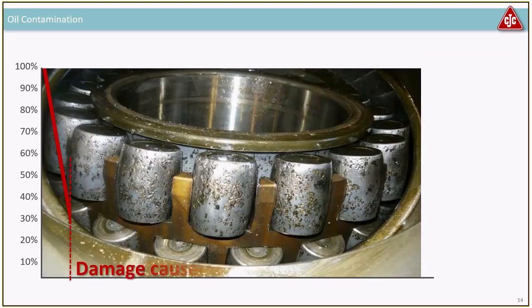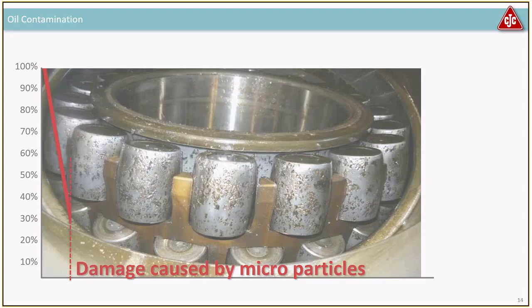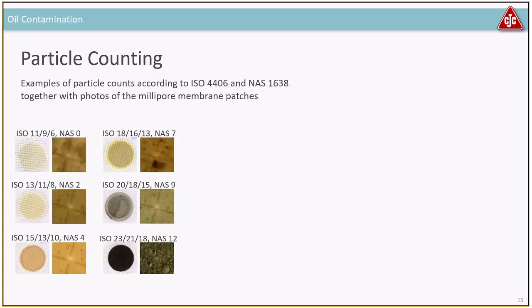This is from a coal mill — you can see spalls or cracks where the surface is failing. When looking for particles, we use something called particle counting, counting particles according to the ISO standard ISO 4406, or some use the NAS standard. The NAS standard was changed back in 2001 to an AES, but it's still being used, especially in offshore and marine applications.